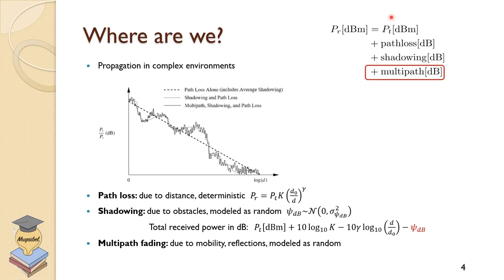We have looked at the received signal as the transmitted signal, with path loss — which we have considered — and shadowing. Path loss is deterministic and we use the path loss exponent model. We looked at shadowing and modeled it as a random process with log-normal distribution. Now we are looking at the multipath impact.